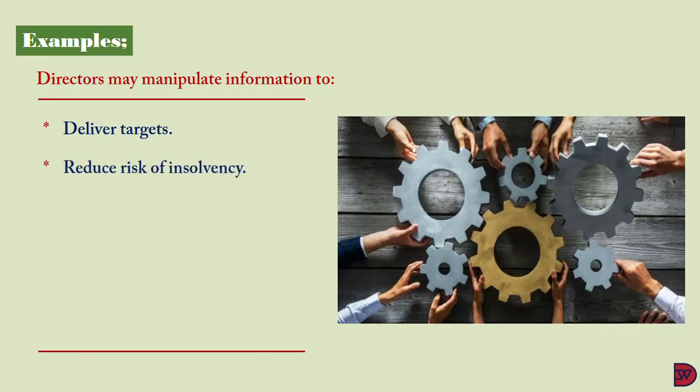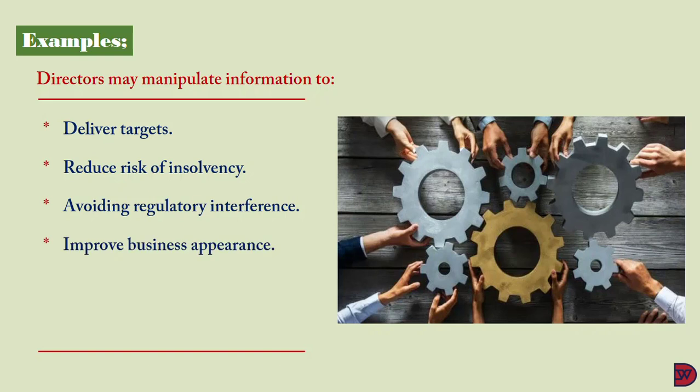Secondly, reduction of risk and insolvency: directors can avoid disclosing a breach of loan covenant. They are supposed to disclose in their notes when there is an indication that the business is not a going concern — that it is nearing bankruptcy. Regulatory bodies might appoint administrators to step in to manage affairs; to avoid this, directors might manipulate figures so that users do not realize the situation.